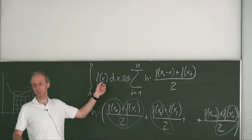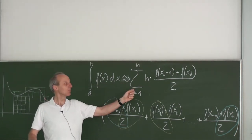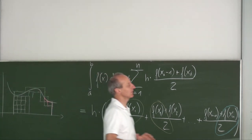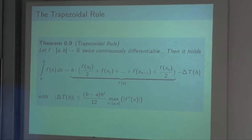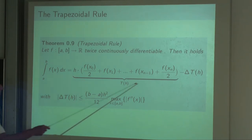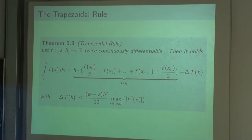Of course, if the function is not linear, we don't have an exact equality here — this is only a rough approximation. But in the theorem we do have an equal sign, because we add an error term. The full integral equals T(h) — the trapezoidal rule — minus the error term ΔT(h). This error is what the trapezoidal rule makes.